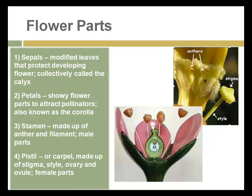The critical parts of a flower are the sepals, also known collectively as the calyx — those are modified leaves that protect the developing flower. Petals are the usually showy flower parts that attract pollinators; collectively, all of the petals of a flower are known as the corolla. There's the stamen, which is the male part of the flower made up of anthers and filaments. And the pistil, which includes the stigma, style, ovary, and ovule — those are the female parts of a flower.